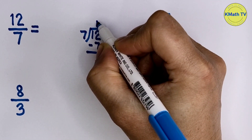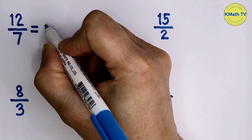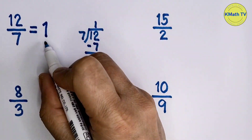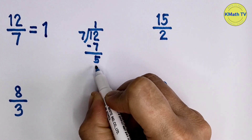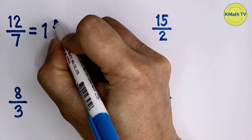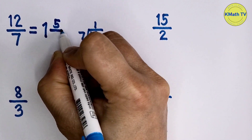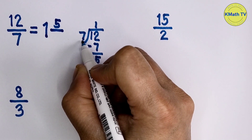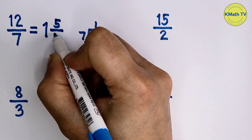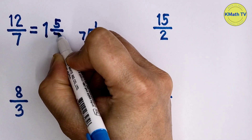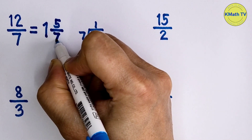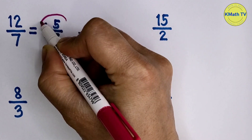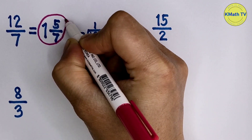The remainder is 5 and the quotient is 1. To write this as a mixed number, the quotient 1 is the whole number, the remainder is the numerator, and the divisor is the denominator — which is still 7. So 12 sevenths is 1 and 5 sevenths as a mixed fraction.